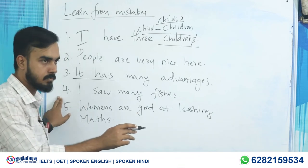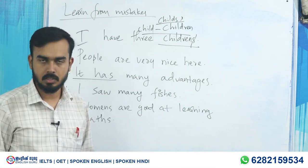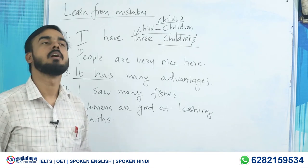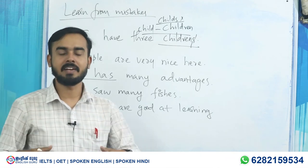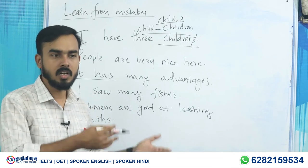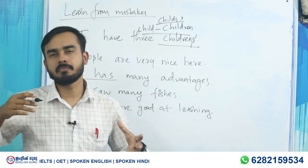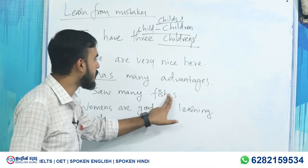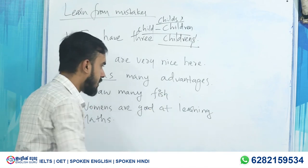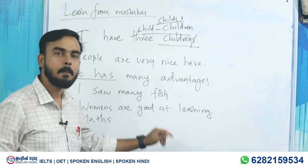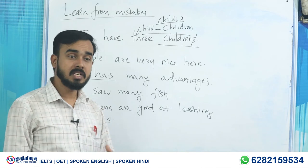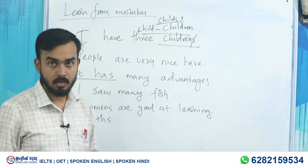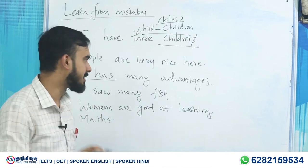Moving on to the fourth one: 'I saw many fishes.' Most people know there is no word like 'fishes' — one fish, two fish. We have a mentality of adding an 's' to make any plural, but that is not correct here. You have to say 'I saw many fish.' However, if you are referring to different types of fish, then you can say 'types of fishes' — that usage is acceptable.